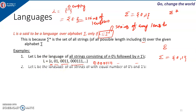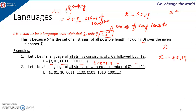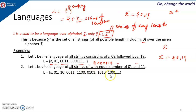Similarly, if L is the language of all strings with equal numbers of zeros and ones, the 0s and 1s can appear in any order — not necessarily zeros followed by ones. So 01, 10, 0011, 0101, 1010, 1100 are all valid. The only requirement is an equal count of zeros and ones.